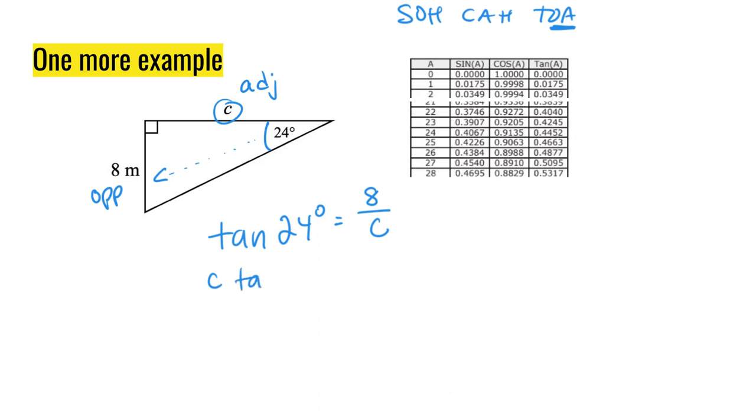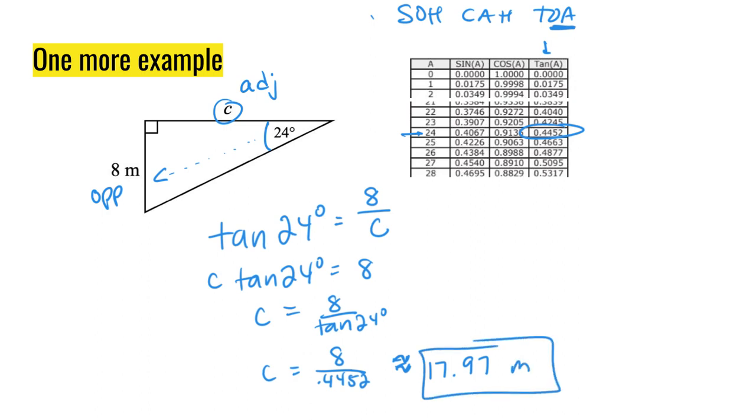Same setup as before. Let's multiply to get rid of that fraction. Let's divide to isolate my unknown. Let's substitute using the table. 8 over the tangent of 24, which is 0.4452. I use my calculator to find that the unknown is approximately 17.97. It looks like this is meters. C is 17.97 meters.